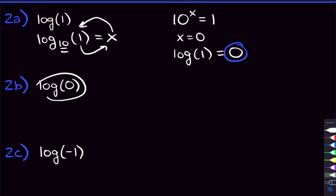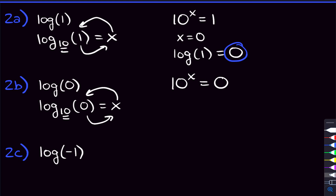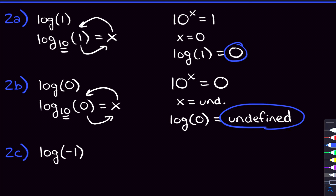Moving on to log of 0. The log doesn't have a base, so we put base 10. Set it equal to x, do the same trick: 10 gets bigger, x becomes the power, and 0 goes to the other side. Now we're asking: 10 to what power equals 0? You can think about that, but you won't come up with anything — you can't raise 10 to any power and get zero. So x is undefined, and log of 0 is undefined.